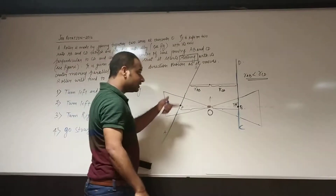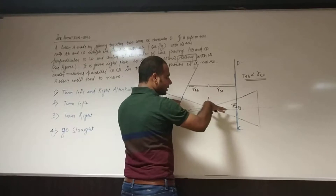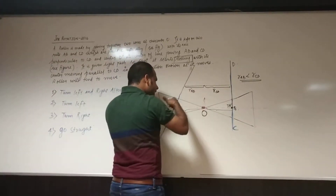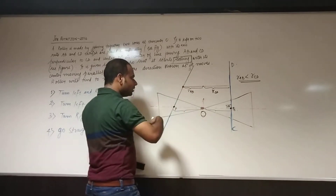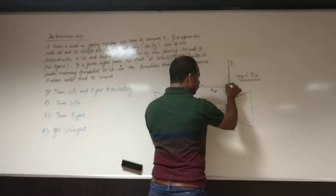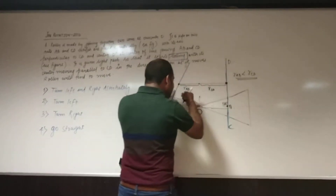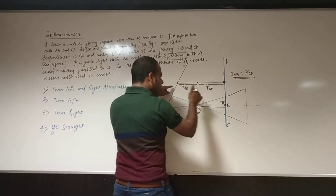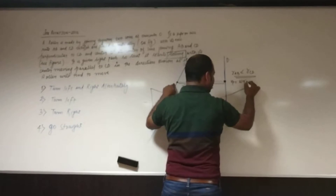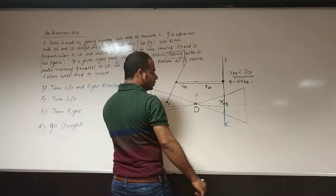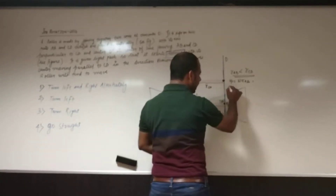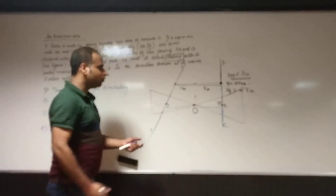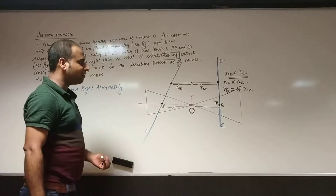Since it is undergoing pure rolling and is a rigid body, the angular velocity omega is the same at every point. The point in contact with the rail has zero velocity. But the point P, which is just above the contact point on the axis, will have velocity VP equal to omega times RAB. And the point Q, just above the contact on the CD side, will have velocity VQ equal to omega times RCD.